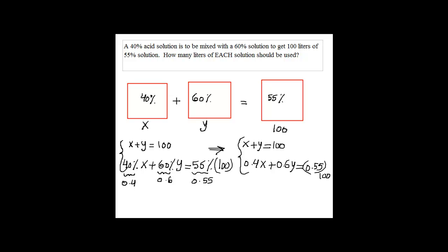So these are two equations that we need to work on. You can use either substitution method or addition method to solve this. And you can eliminate the decimals here. 0.55 times 100 would be 55.